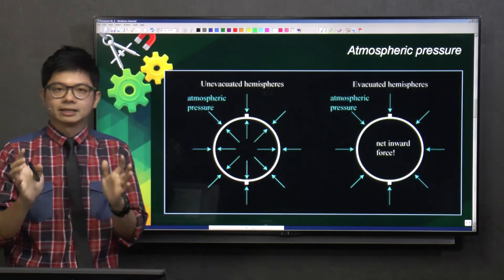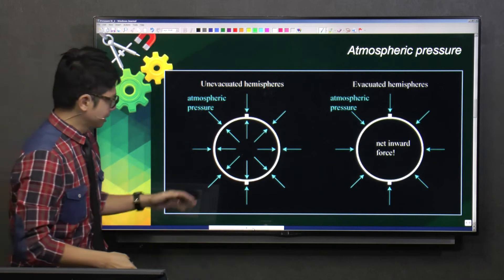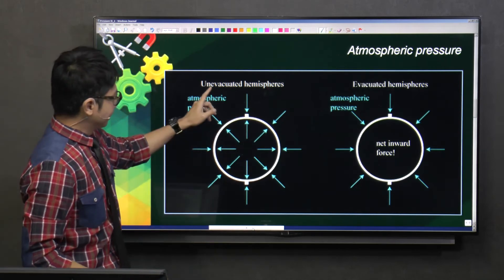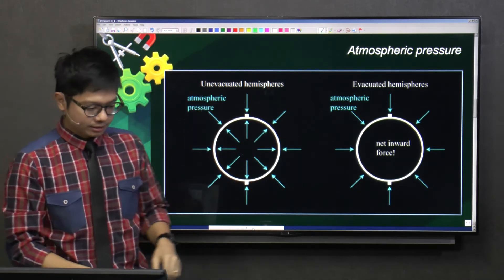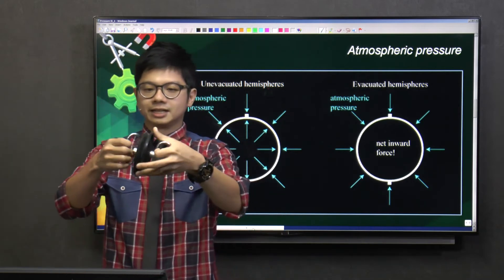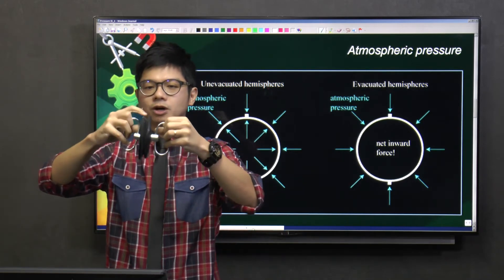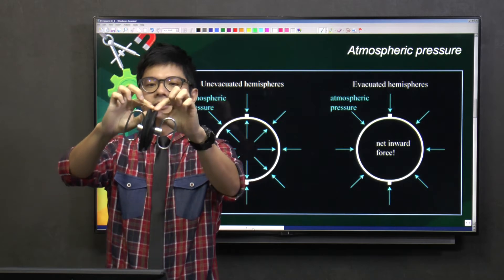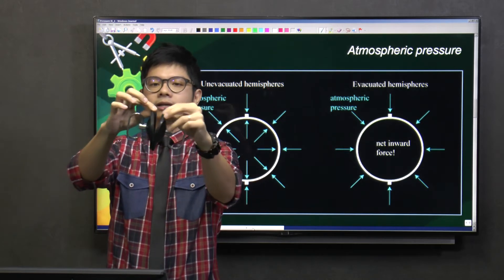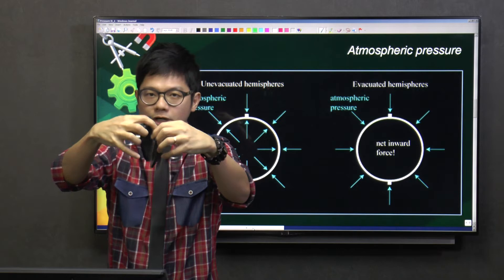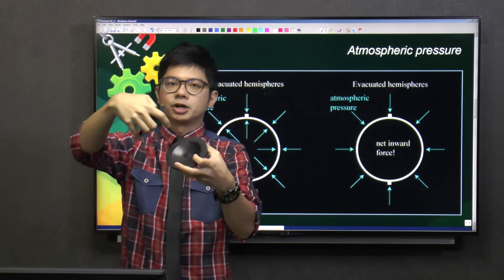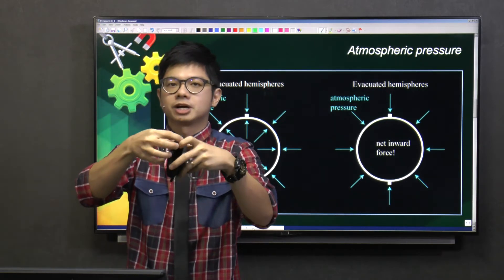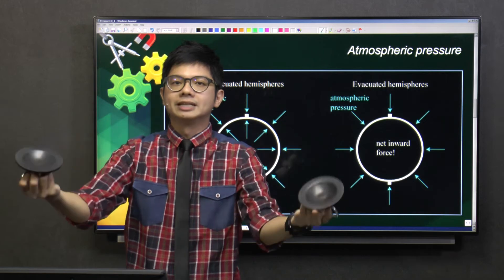Let's look at the working principle. The first part, when it is unevacuated, there's no way you can pull this out. So how to open this? By the side, pull it open. Why? You create an opening for the air to rush inside so that the pressure inside will be the same as the pressure outside. And then you can open it easily.